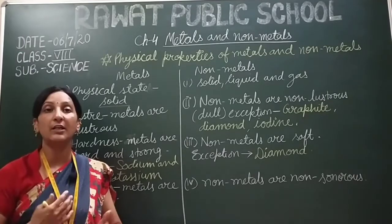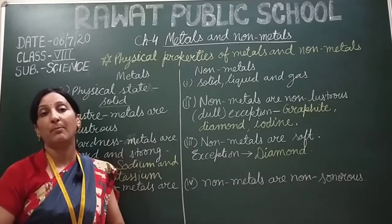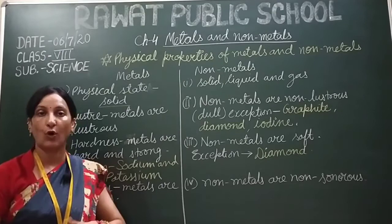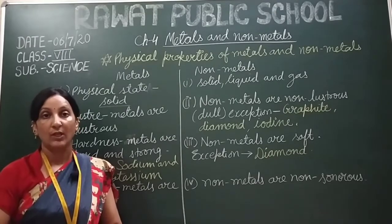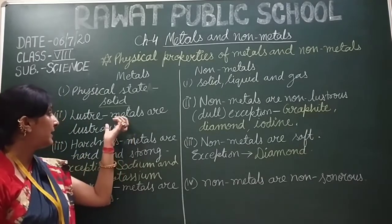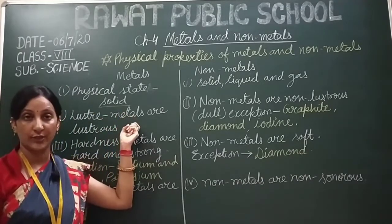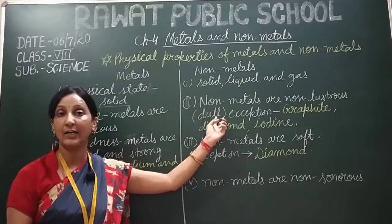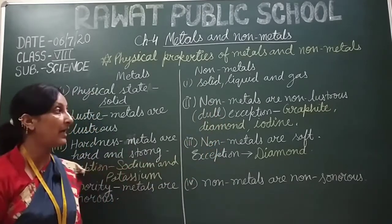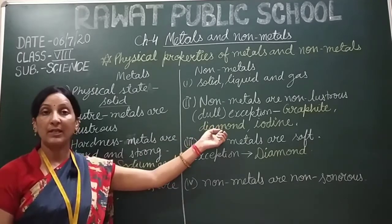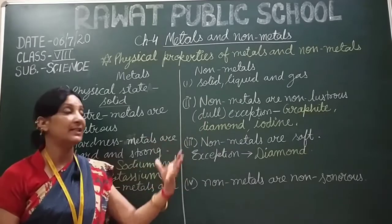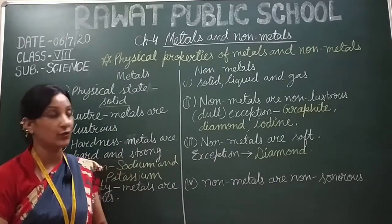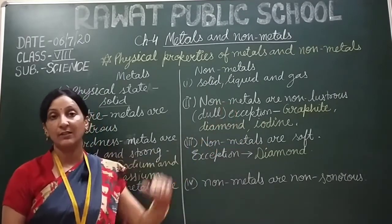To remove this dullness, we have to rub them with sandpaper or apply some other methods. So we can say that metals are lustrous. But non-metals are non-lustrous — they are dull. However, there are exceptions like graphite, diamond, and iodine. Diamond is an allotrope of carbon, and these non-metals have a shiny appearance — they are lustrous. So these are the exceptions among non-metals which are lustrous.